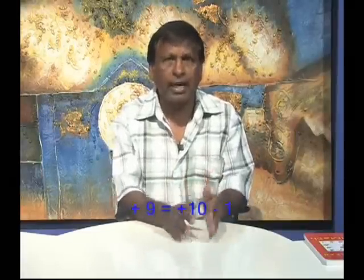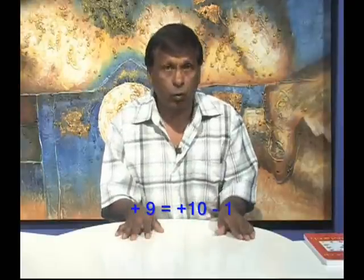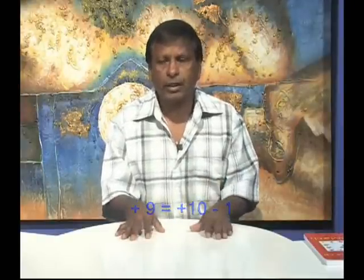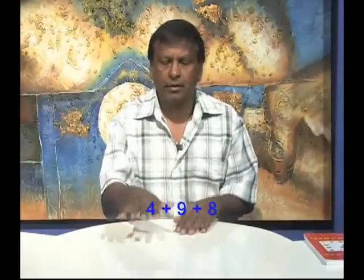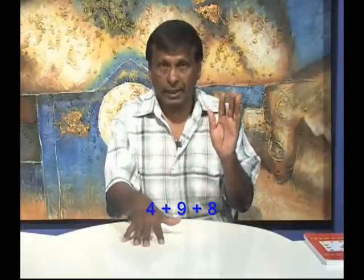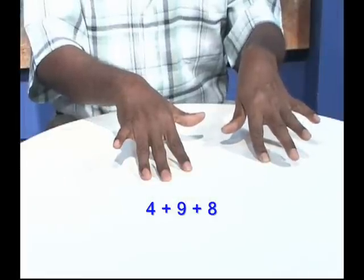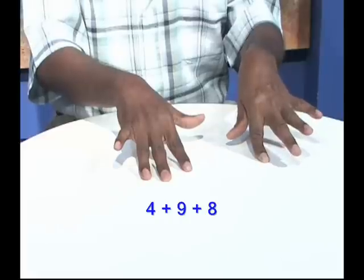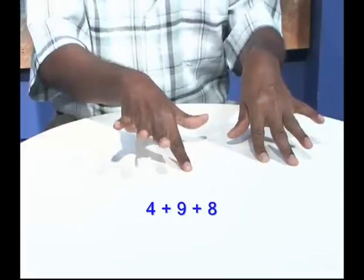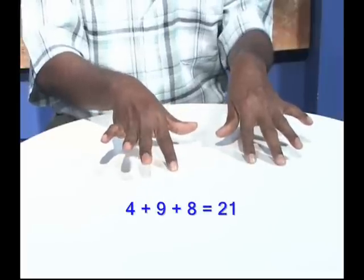Of course, it comes from the fact that 9 is 10 minus 1. What about 8? Suppose I wanted to add 4 plus 9 plus 8. 4 plus 9, so add 10, take away 1, plus 8, add 10, take away 2. And at that point, I have the answer on my hands, 21.